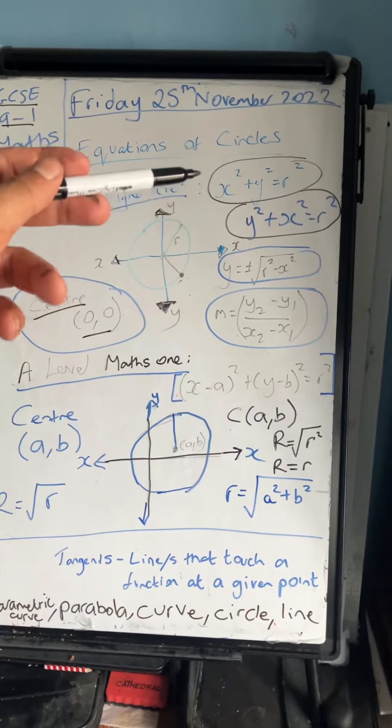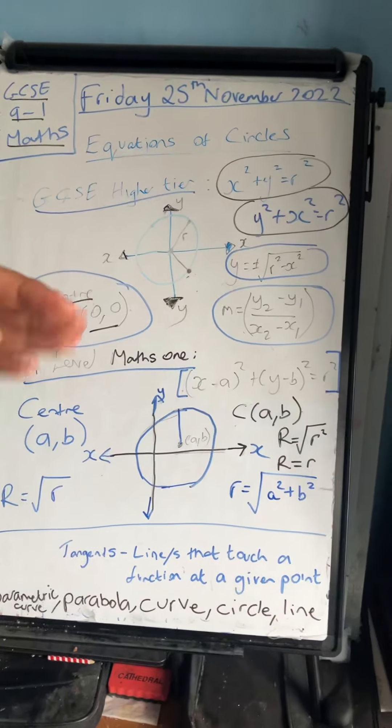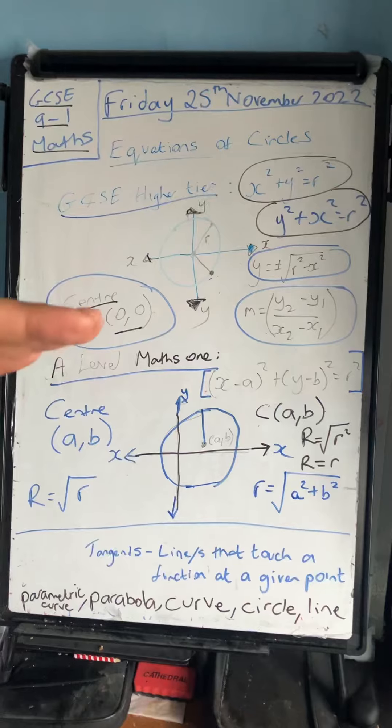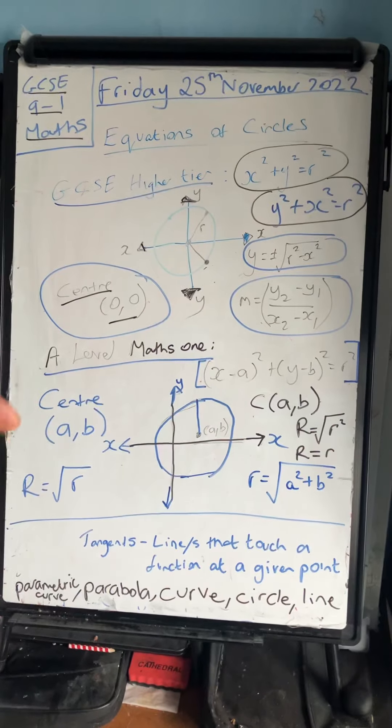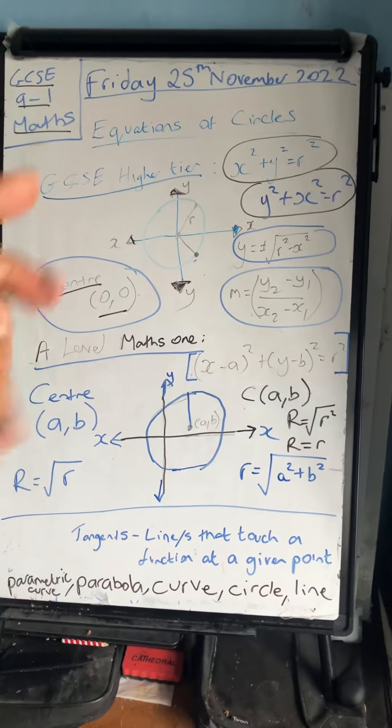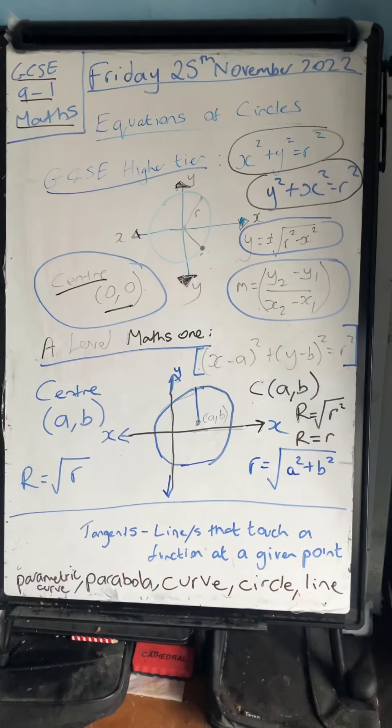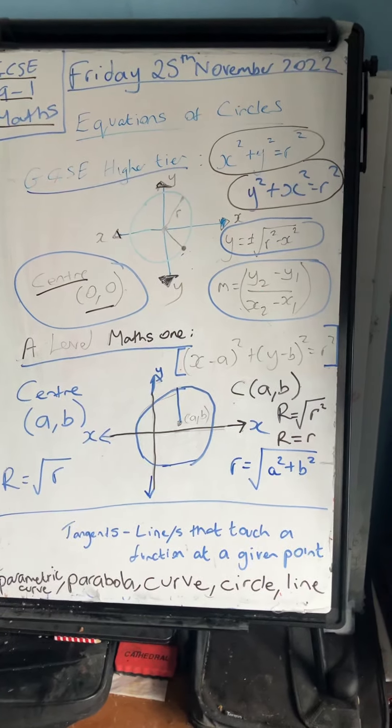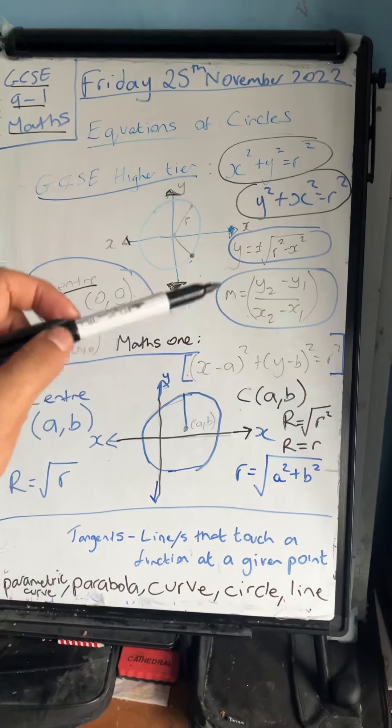A typical exam question might say: given this circle x squared plus y squared equals nine, find the center or the coordinates of the center and the radius. The coordinates of the center is always going to be zero zero if it's in the form x squared plus y squared equals r squared, and the radius would be the square root of nine, which is equal to three.